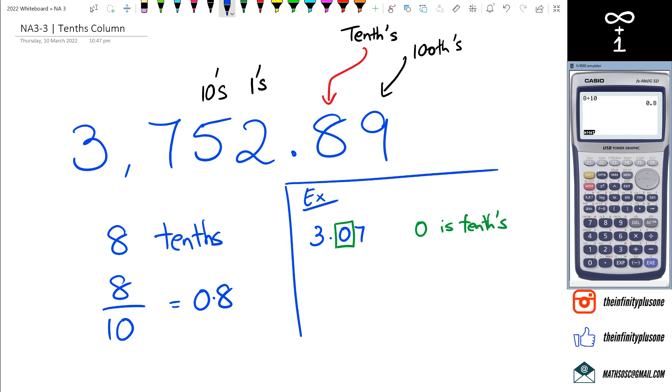What about if we have a number like 0.0005? If they ask you what's in the tenths column, we still only look at the number after the decimal point. So in this case also, 0 is in the tenths column.